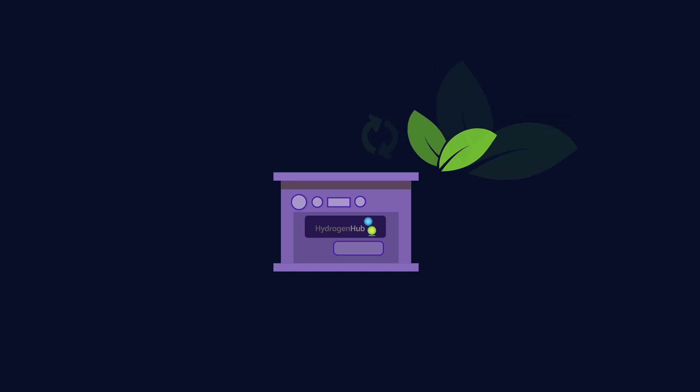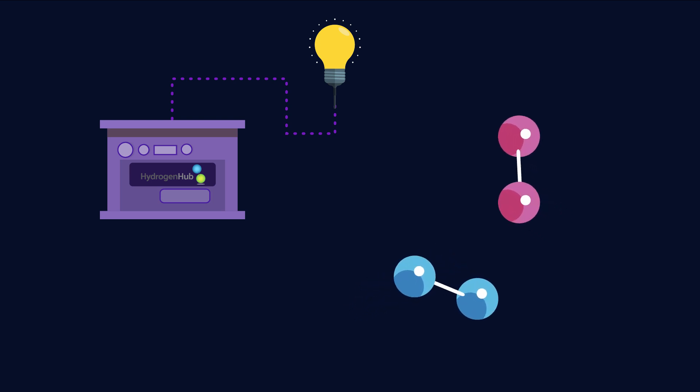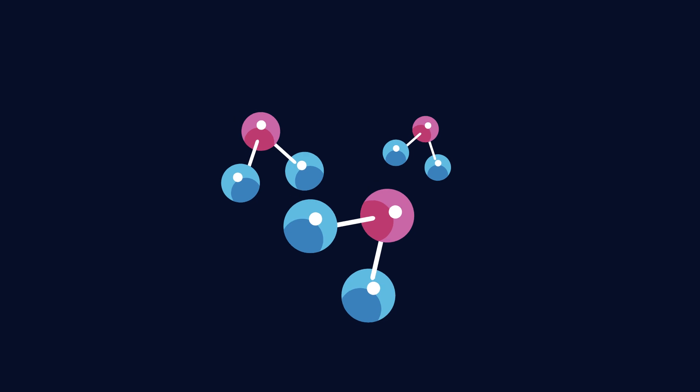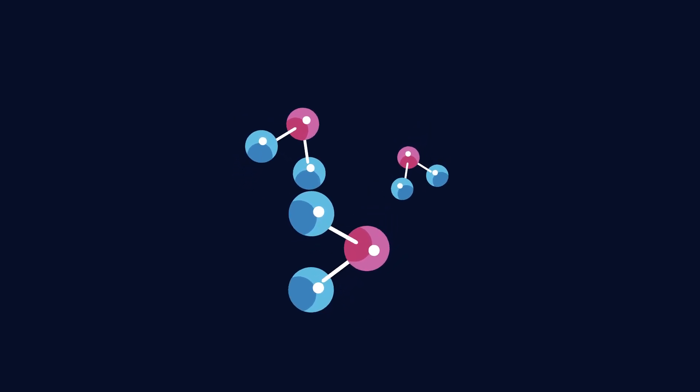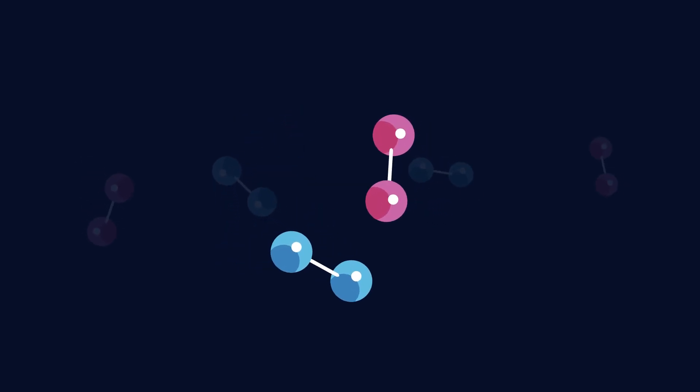Fuel cells generate electricity from the reaction between a fuel, which is normally hydrogen, and oxygen. Earlier we showed how water can be separated into hydrogen and oxygen. Well, it turns out that hydrogen and oxygen actually quite like being together.